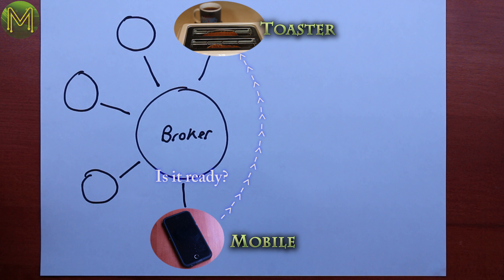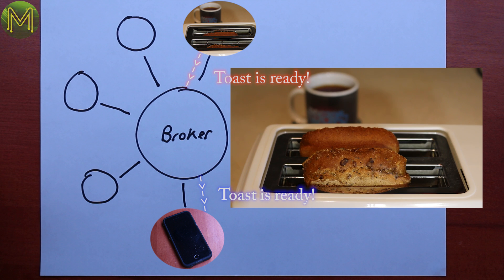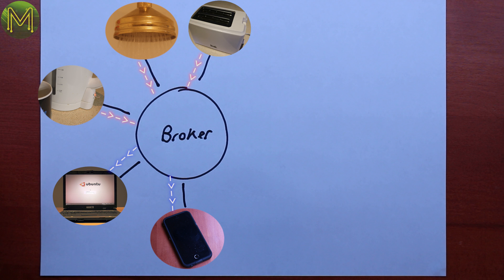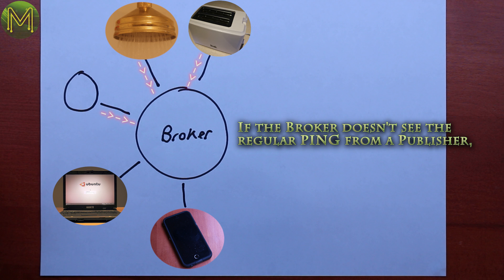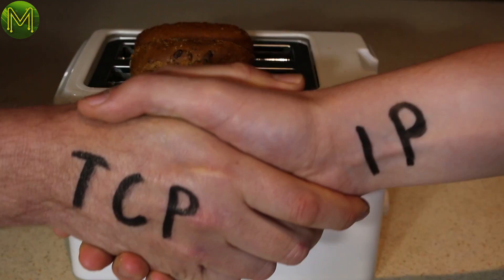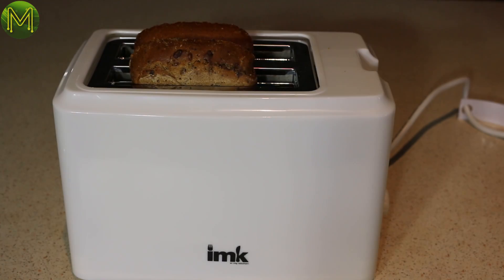Subscribers never need to poll publishers because publishers will only send a message to the broker on an event. All clients initiate and maintain a constant network connection with the broker. So if a publisher vanishes from the network, the broker will notify subscribers. This also enables very responsive communications as there is no TCP/IP setup and teardown for every message sent.